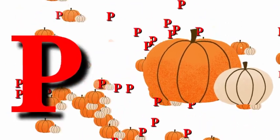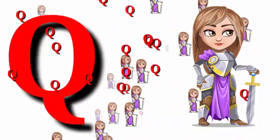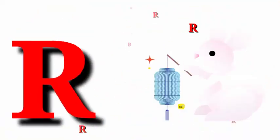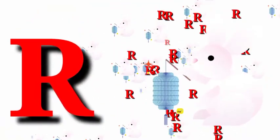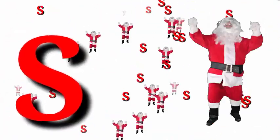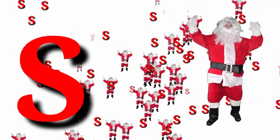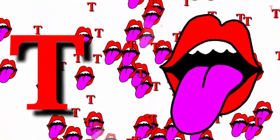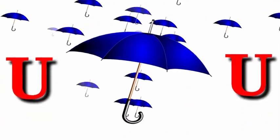Q for queen. S for santa. T for tongue. U for umbrella. Yeah!